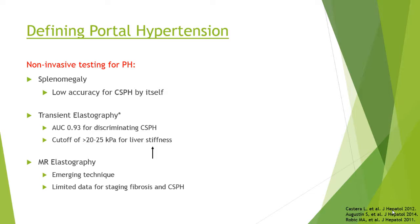MR elastography is an emerging technique that we do not currently do reliably at Henry Ford. Some centers around the country are starting to adopt it, mainly in the research arena. It tells us the degree of fibrosis and can also have some utility for defining clinically significant portal hypertension, but we don't know enough about it yet to use it on a regular basis.